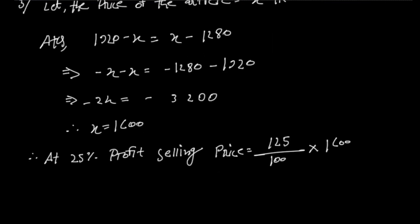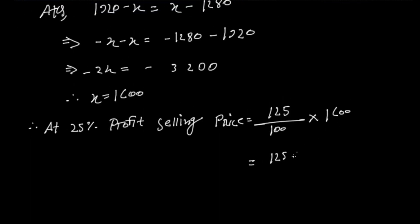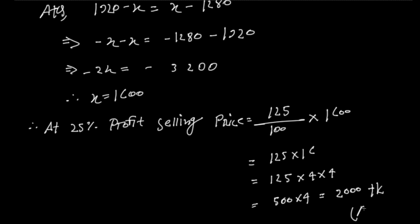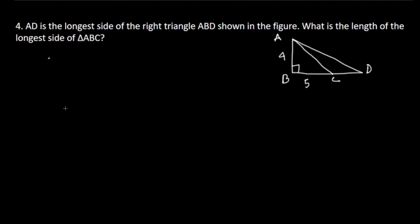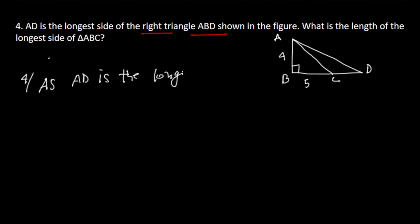So the cost price is 1600. Now for the next problem: AD is the longest side of right triangle ABD shown in the figure. What is the length of the longest side of triangle ABC, where AD is the longest side?